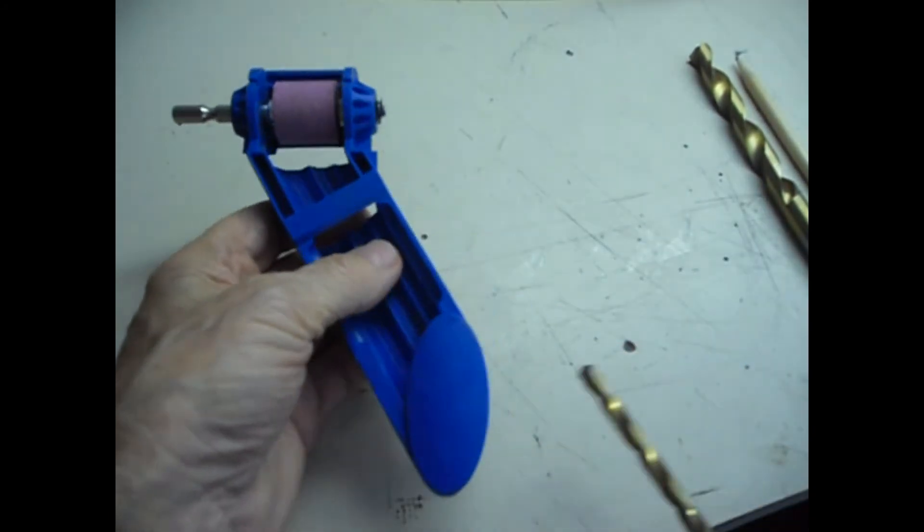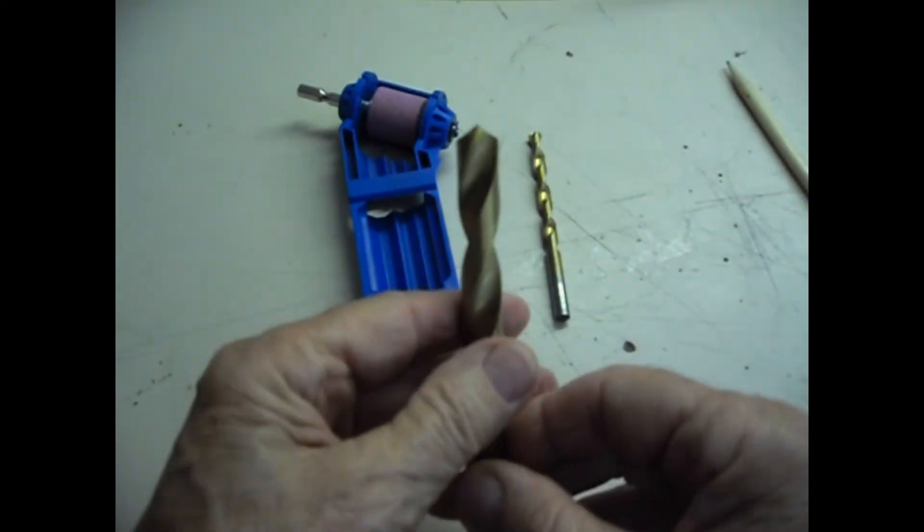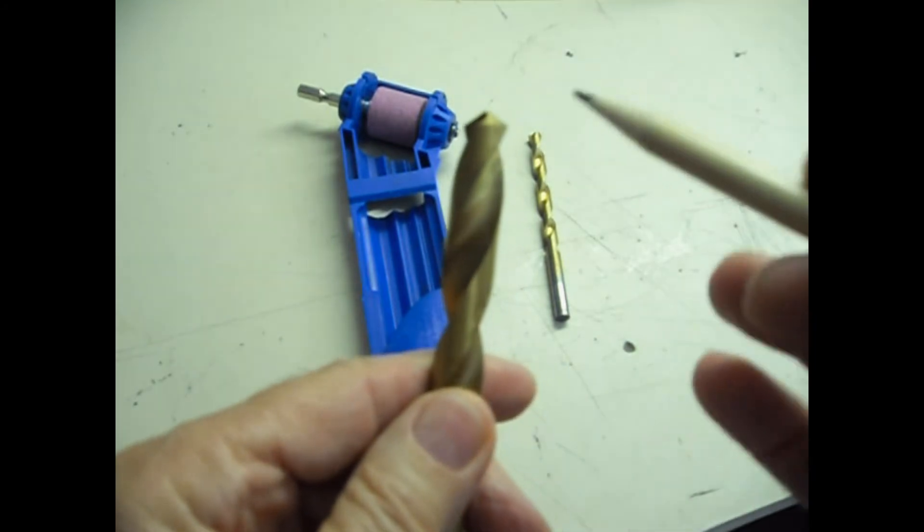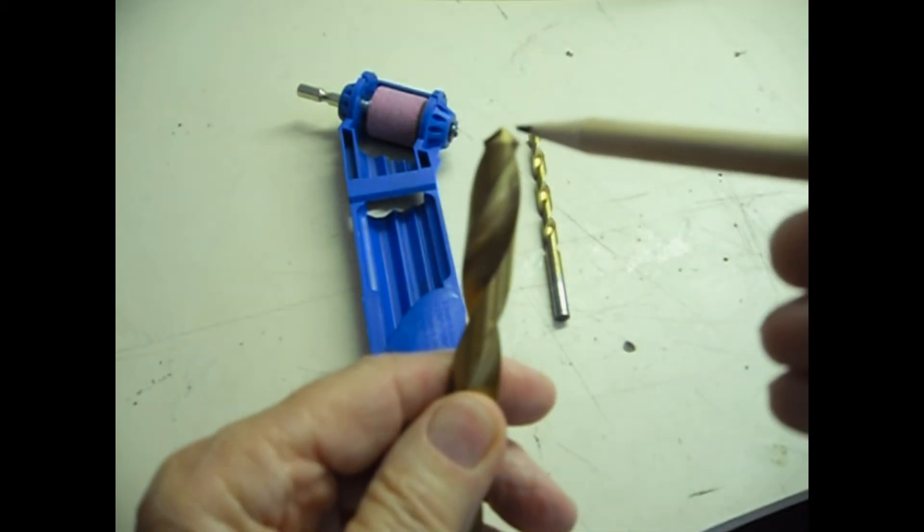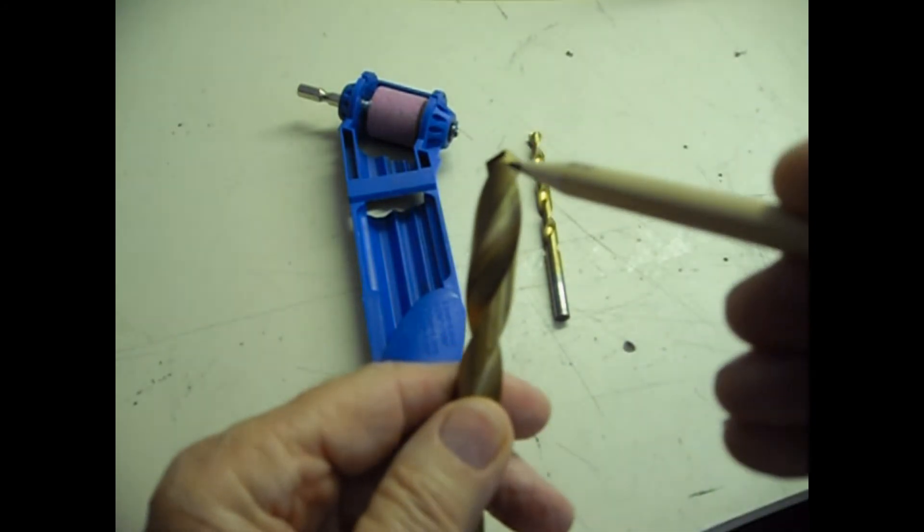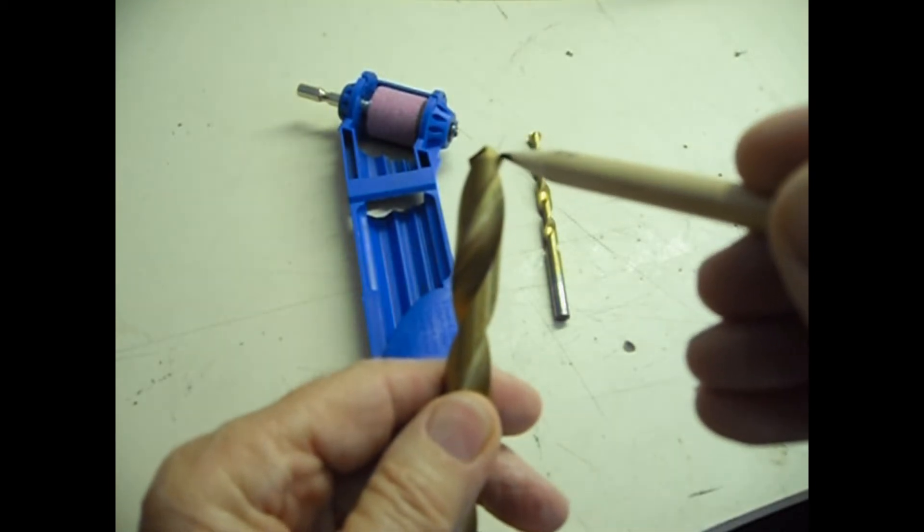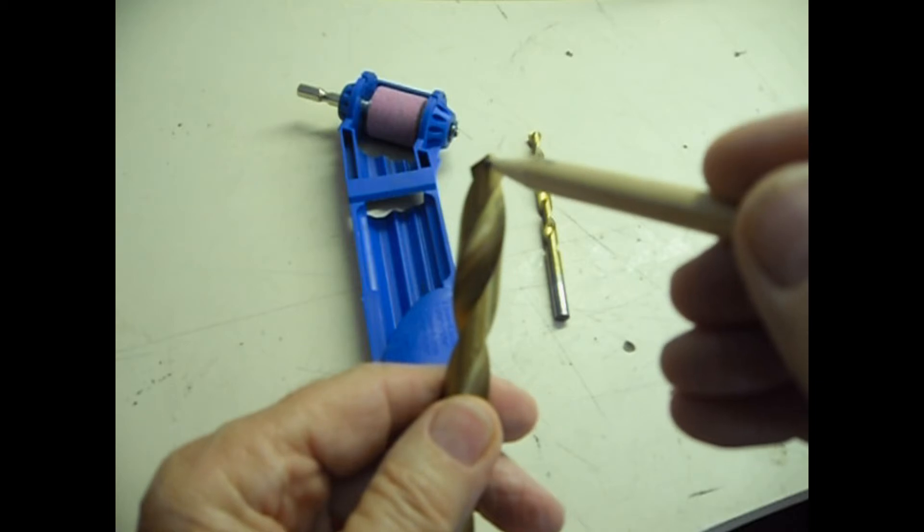And then by looking at a larger drill, I discovered the reason why. If you look carefully, the cutting edge is higher than the trailing edge. So the drill bit has to be sharpened at an angle.